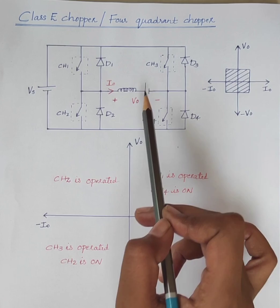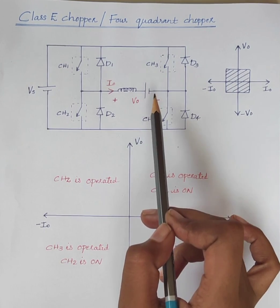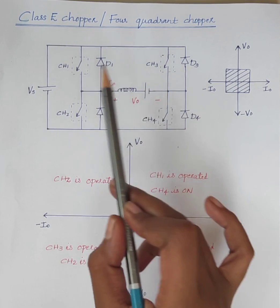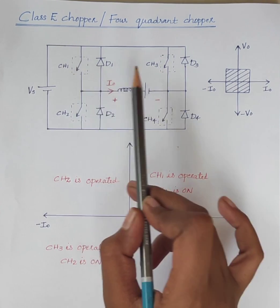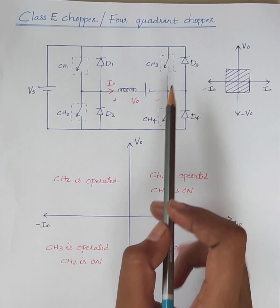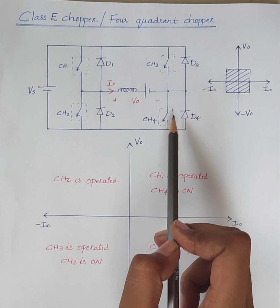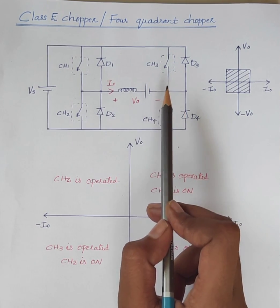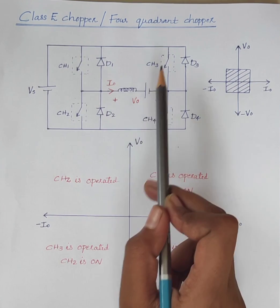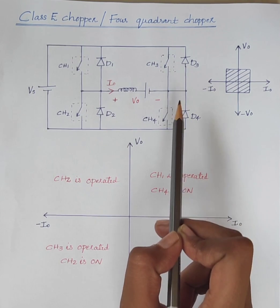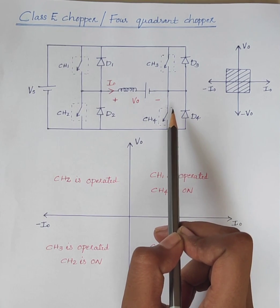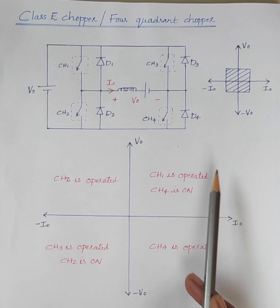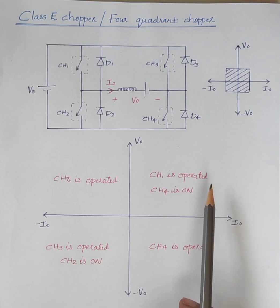It basically consists of four semiconductor switches CH1, CH2, CH3, CH4, and four diodes D1, D2, D3, D4.